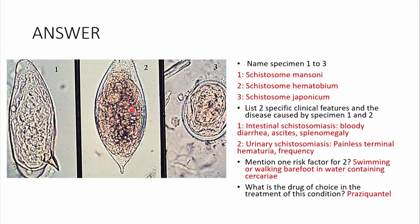These are schistosome eggs. Specimen one is Schistosoma mansoni, specimen two is Schistosoma haematobium — both found locally — and specimen three is Schistosoma japonicum, which is not found locally. To tell them apart: the 'T' in haematobium reminds you that the spine is terminal; mansoni has a lateral spine; japonicum is round with no spine.